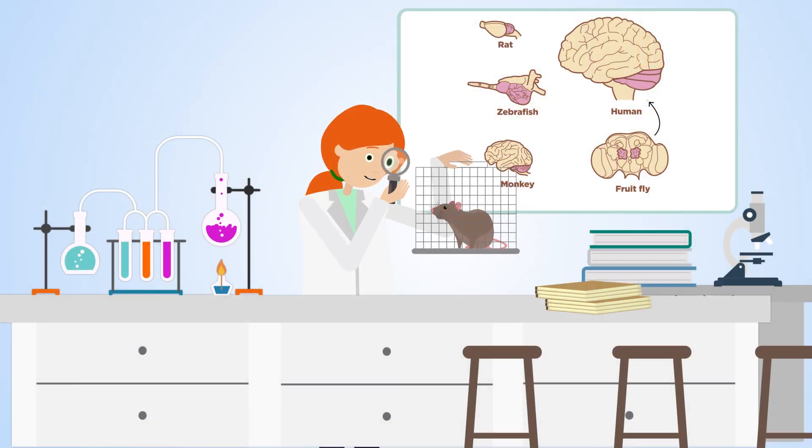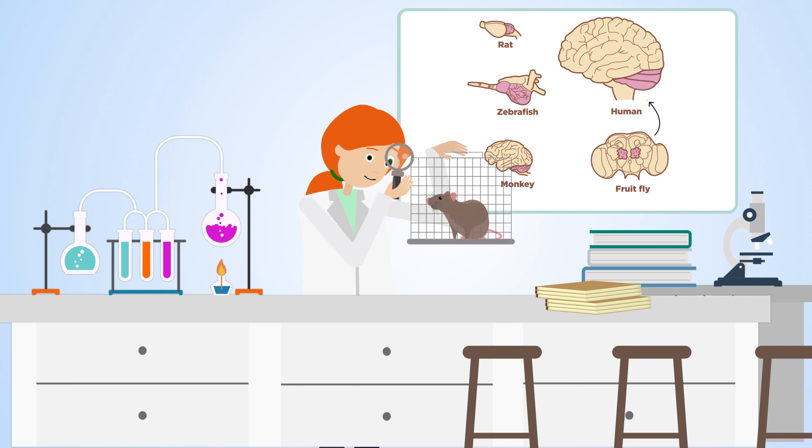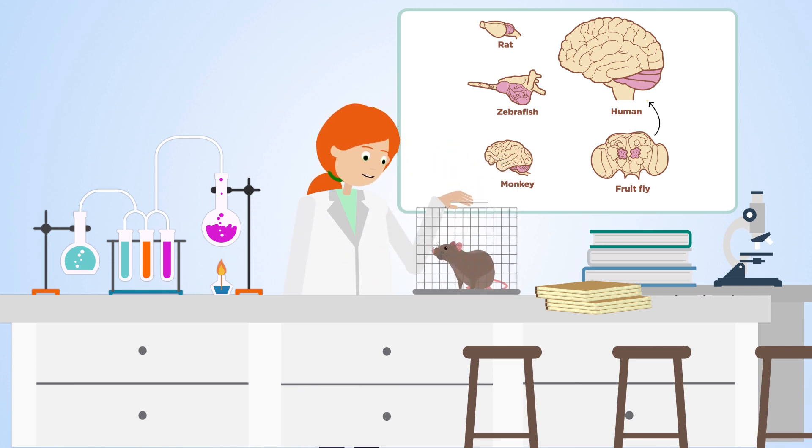Studying animal brains is hugely helpful for understanding our own brains. Lots of different animals can be used, from fruit flies to mice, rats and monkeys. Each animal model has its own advantages and most of what we know about the brain comes from animal studies.